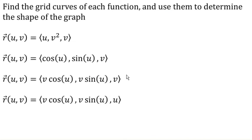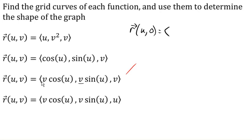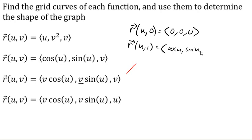Now the third surface. Notice we have v multiplying the sine and cosine — that suggests the radius of something is going to be changing. I see rotation in the u variable, but the radius changes with v. Letting v equal 0 just gives the zero vector, which isn't informative. If v equals 1, we get (cos u, sin u, 1) — a circle at z equals 1.